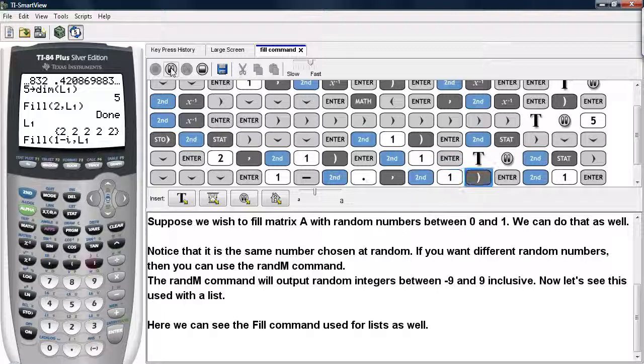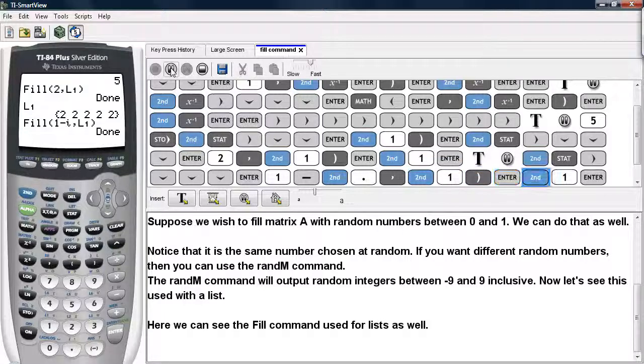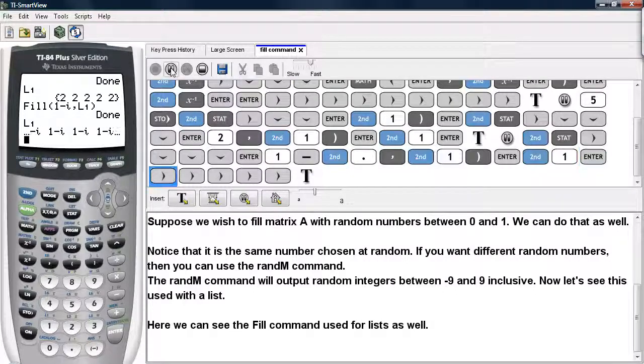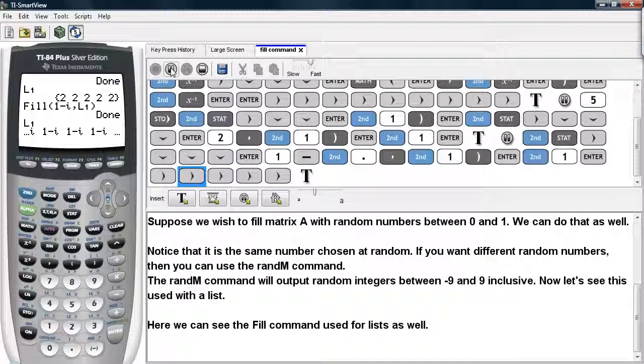It says done, and then I can call list 1. And here we have a list of the value 1 minus i.